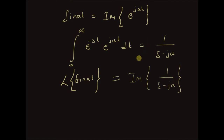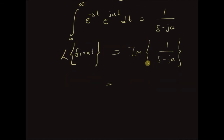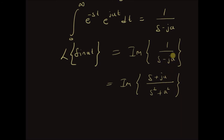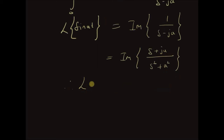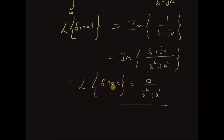Note that we applied the imaginary component operator to the Laplace transform — this is valid since the Laplace transform is a linear transform. The imaginary component of 1 over s minus ja equals the imaginary component of s plus ja over s squared plus a squared, obtained by multiplying with the conjugate of the denominator. Therefore the Laplace transform of sine of at equals a over s squared plus a squared.